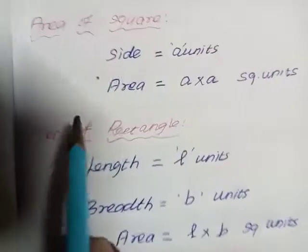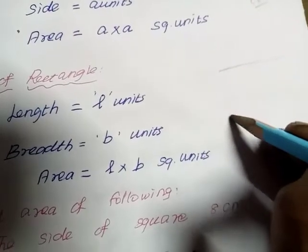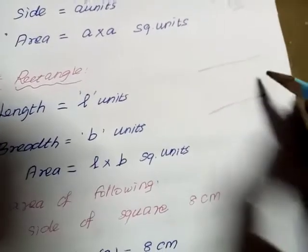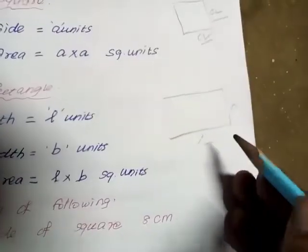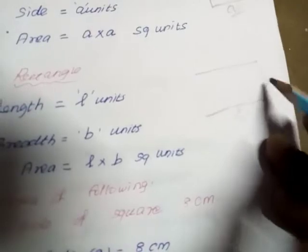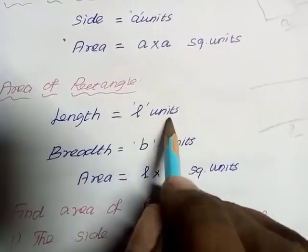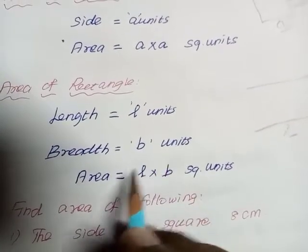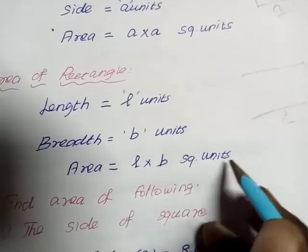Now, area of rectangle. We know a rectangle is also a four-sided figure with length and breadth. Area of this figure equals length into breadth. So here length equals l units and breadth equals b units. Therefore, area equals l into b square units.